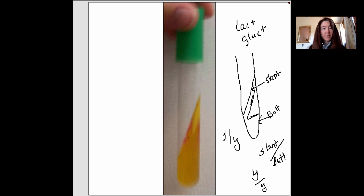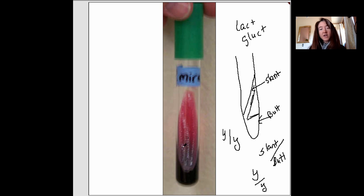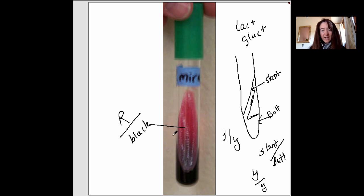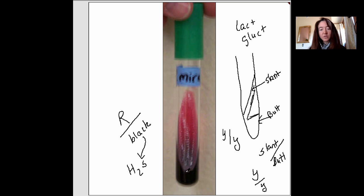Here's another tube. The slant looks to be red, so this is red over black. A red slant over a black butt. If we see a black butt, that indicates hydrogen sulfide production — H2S. Perhaps this is Proteus mirabilis, an epic H2S-producing bacterium. The other thing to remember is that if the butt looks black, it's obscuring a yellow butt. A black butt means a yellow butt — that's something with the KIA you just have to remember.